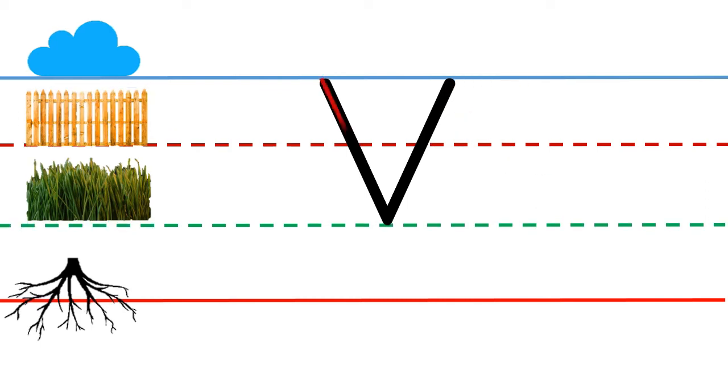Try again. Put your pencil on the skyline. How to make a slant line? Let's try again. Well done, kids. You did great.